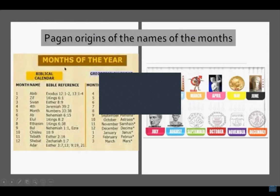The biblical calendar shows some of the months listed in the Bible, like Abib, Sivan, and Adar. The Gregorian calendar, by contrast, is named after pagan deities.